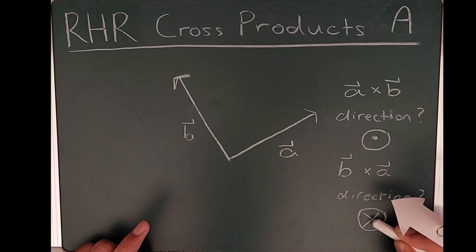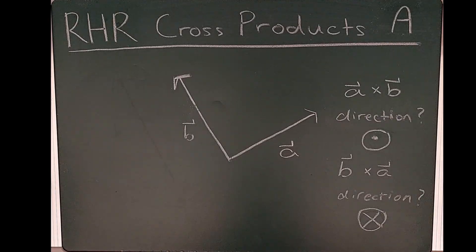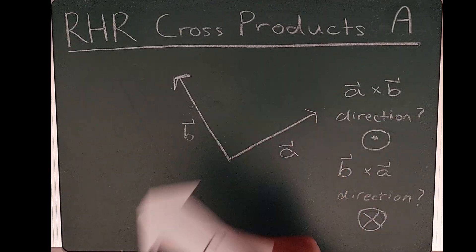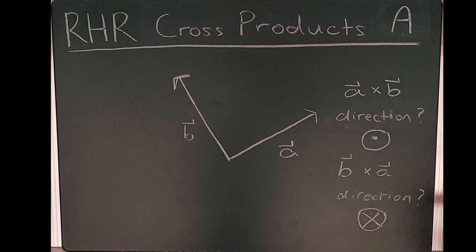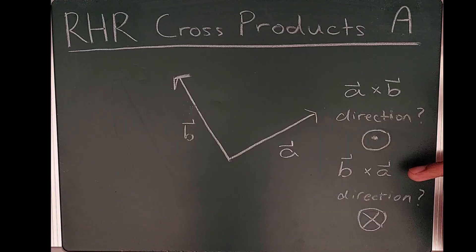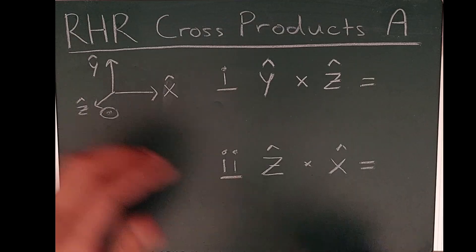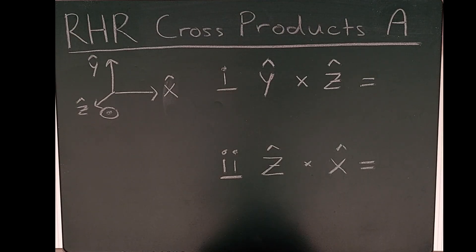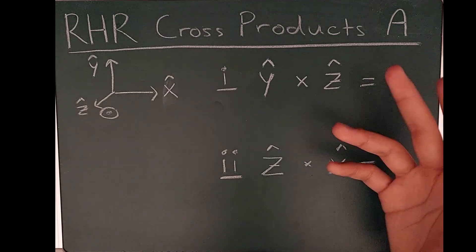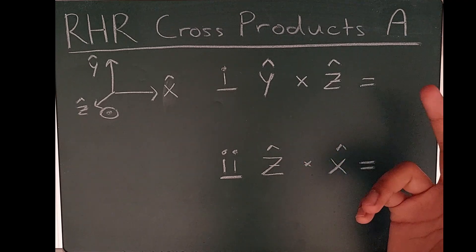Check out the previous video on cross products for more on that convention. So we see that B cross A is the opposite direction of A cross B. Now let's work through two quick examples with this index finger, middle finger, thumb right-hand rule for cross products. We'll do the same examples for all three methods and find they all give the same answers.